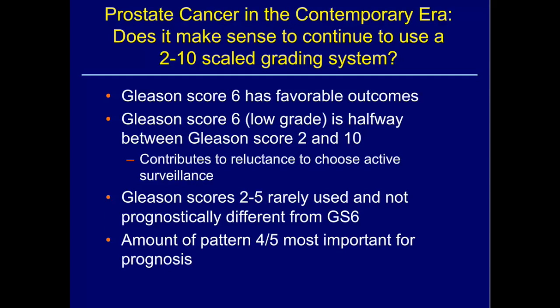In the contemporary era, does it really make sense to continue using a 2-to-10 grading system? We understand what a Gleason 6 tumor is, but from the patient's standpoint it may be confusing. A Gleason 6 tumor has a favorable outcome — it's low-grade — but to patients, Gleason 6 looks halfway between 2 and 10, making it appear intermediate. I think this contributes to a reluctance to choose active surveillance. Patients say, 'Six isn't so good, is it?' They don't understand that Gleason 2 to 5 is rarely used today and not prognostically different than 6.